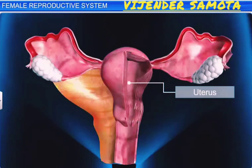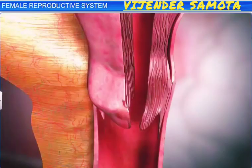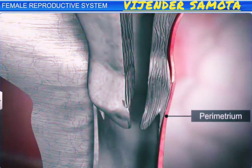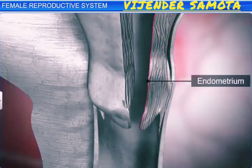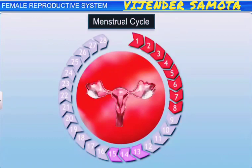The wall of the uterus is composed of three layers of tissues. The outer thin membranous layer is called the perimetrium. The middle thick layer of smooth muscle is called the myometrium, and it helps during delivery by producing strong contraction motions. The inner glandular layer is called the endometrium, and it undergoes cyclical changes during the menstrual cycle.